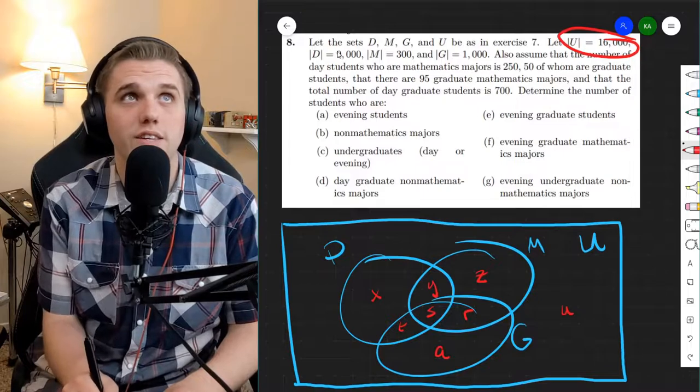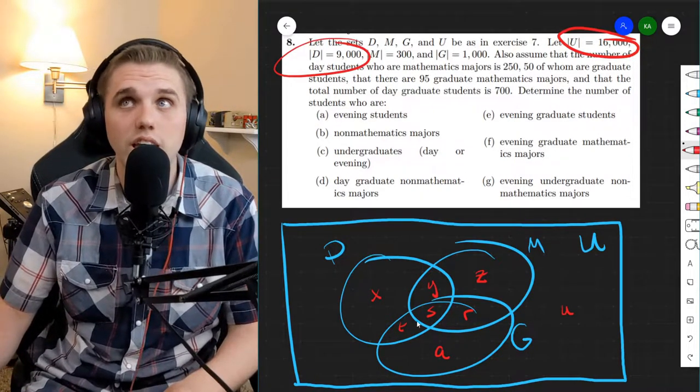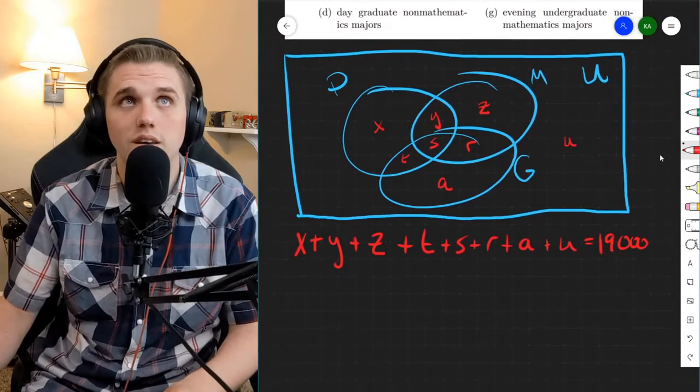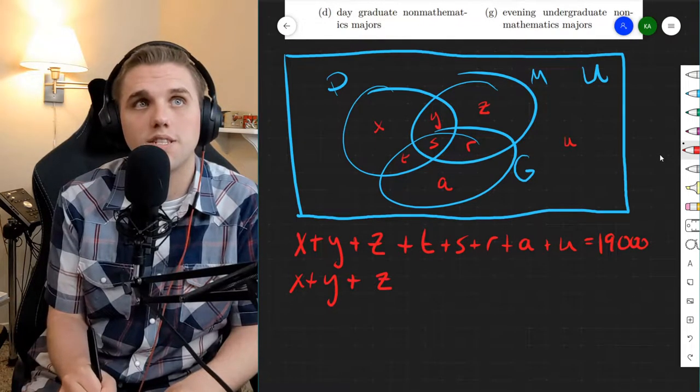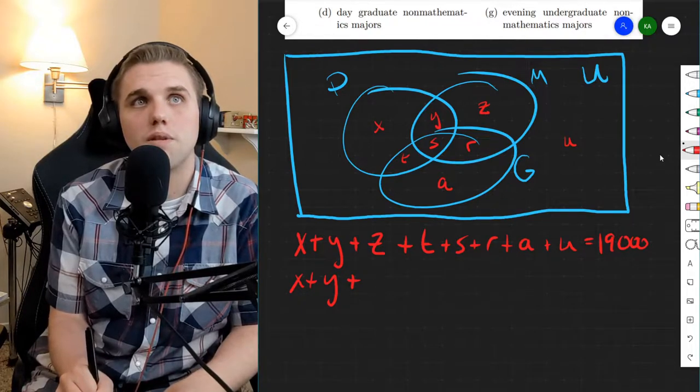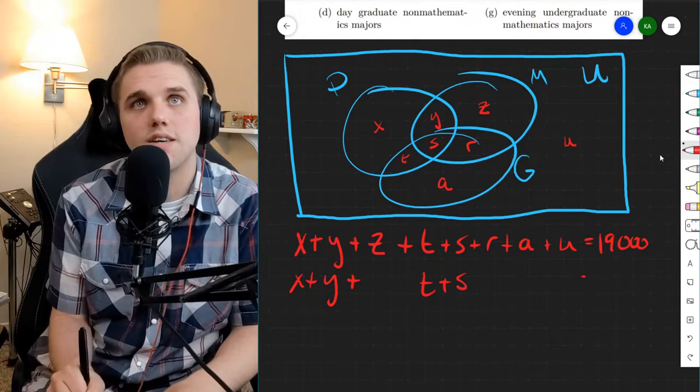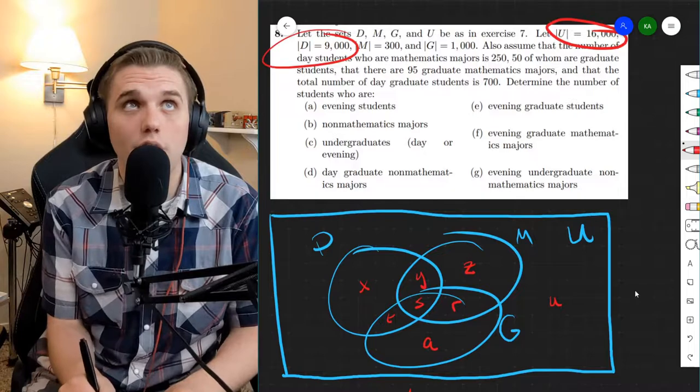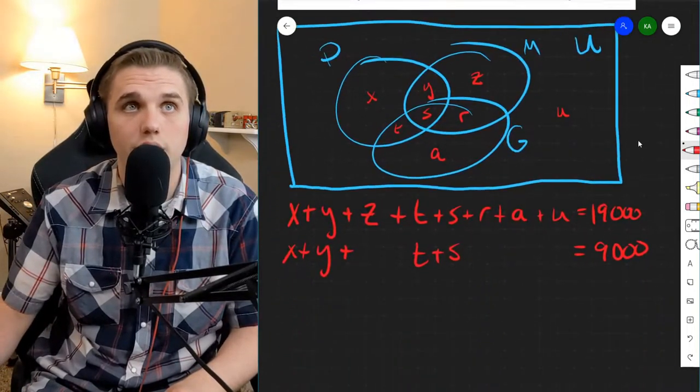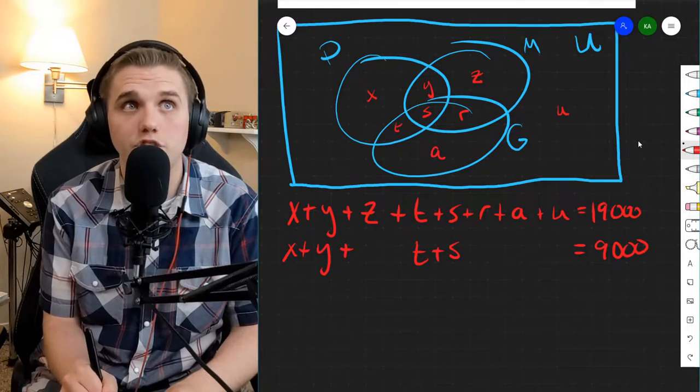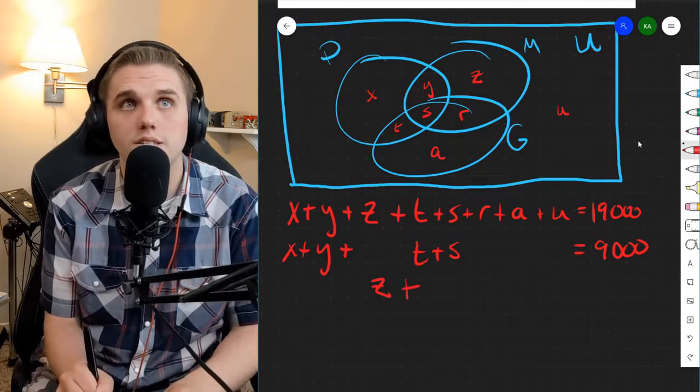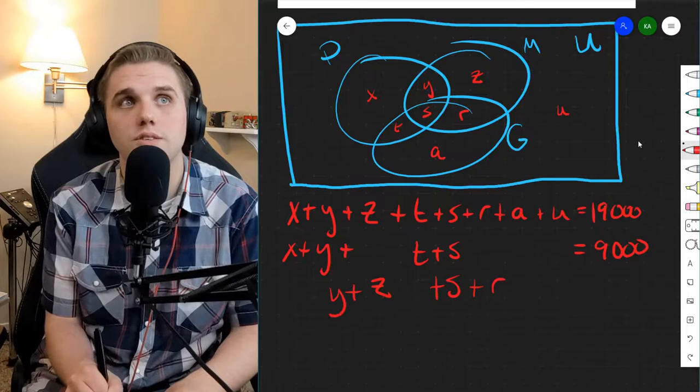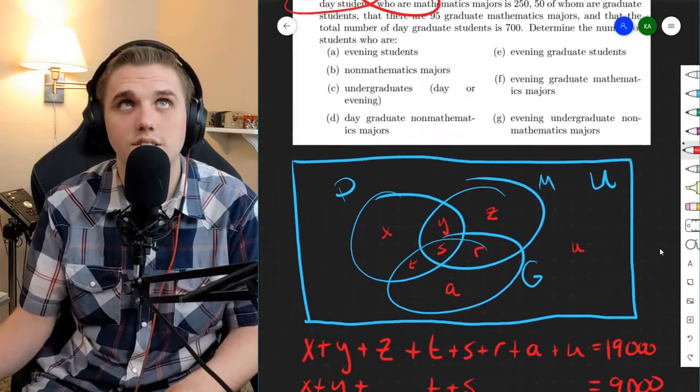We also know that the size of D is 9,000. Now, D only contains X, Y, T, and S. So if we add up all four of those, we get 9,000. So X plus Y plus T plus S equals 9,000. Next up, we know that the size of M is 300. That means that M, which is Y plus Z plus S plus R, gives us 300.